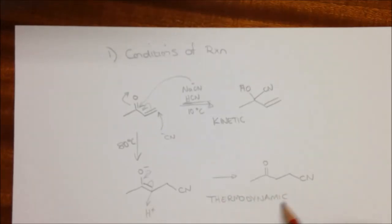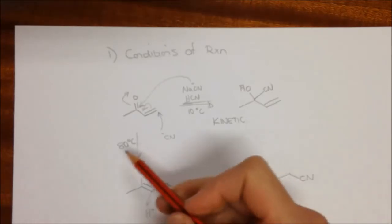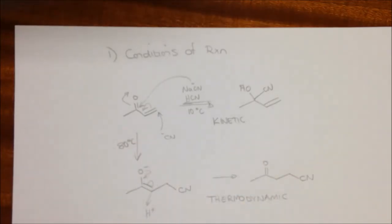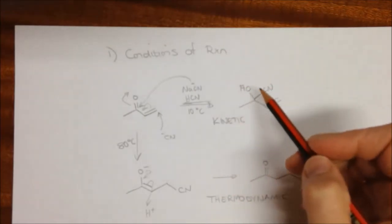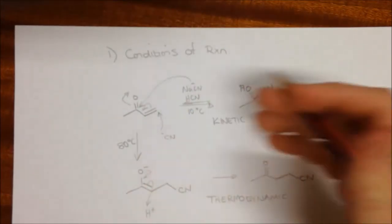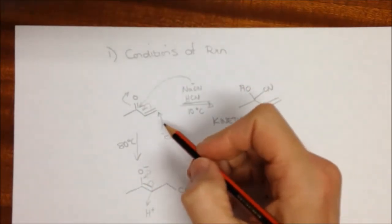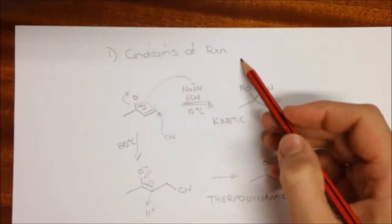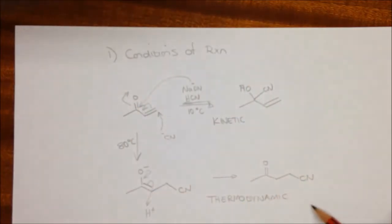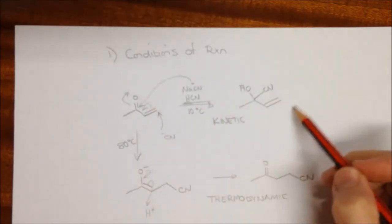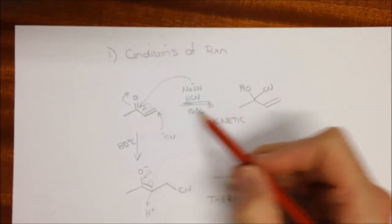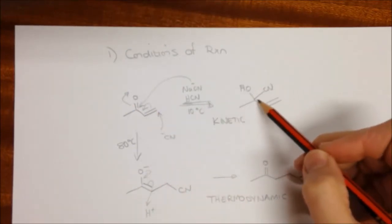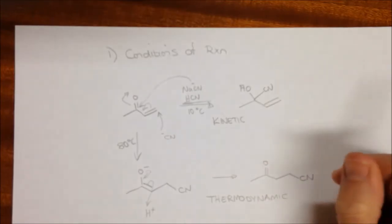Thermodynamic compounds, or products at least, are the ones which tend to be more stable and tend to be achieved at higher temperatures. So one thing that controls whether we have a conjugate addition or not can be the conditions of the reaction. So thermodynamic conditions tend to favor the conjugate addition, whereas kinetic conditions, colder temperatures, can favor the 1,2 addition that we have seen already.